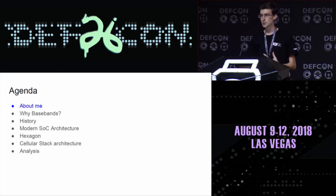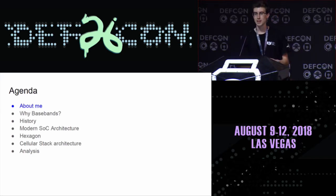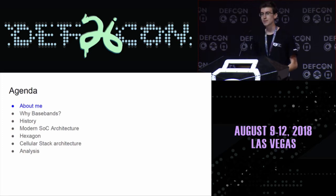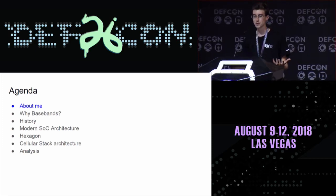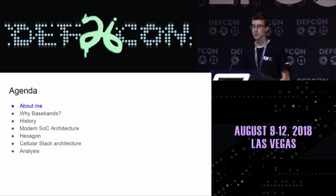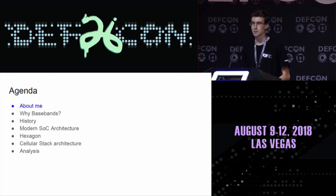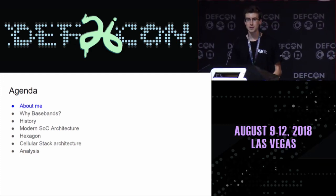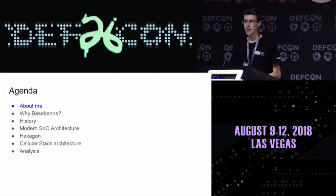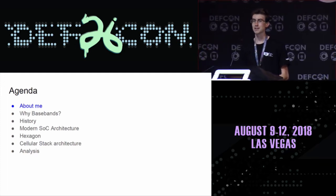A little bit about the history and evolution of the platform, because knowing certain design decisions and why they were made in the past can really help you when you're looking at disassembly and code. A little bit about how a modern system-on-a-chip is laid out — it's changed a lot since the first cell phones were introduced. A little bit about the actual custom CPU architecture that the baseband chips in Qualcomm phones run on, a brief intro to some cellular stuff, and then how you actually start analyzing these things.